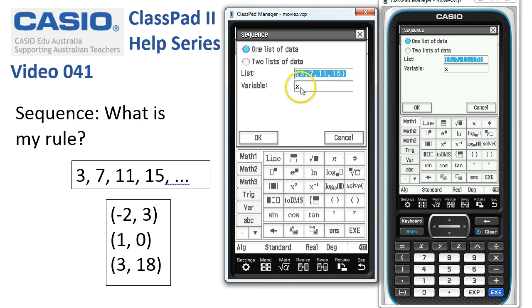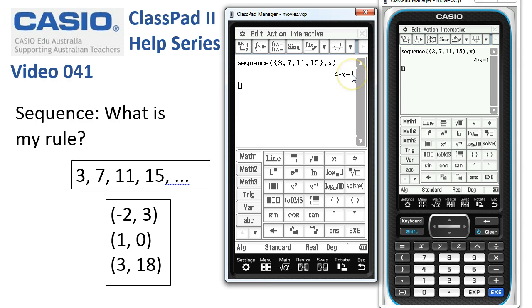There's not much for us to do here. We could change the variable to some other letter, but we'll just tap OK. And here's the rule, 4x take 1. So that's one way of using the sequence.